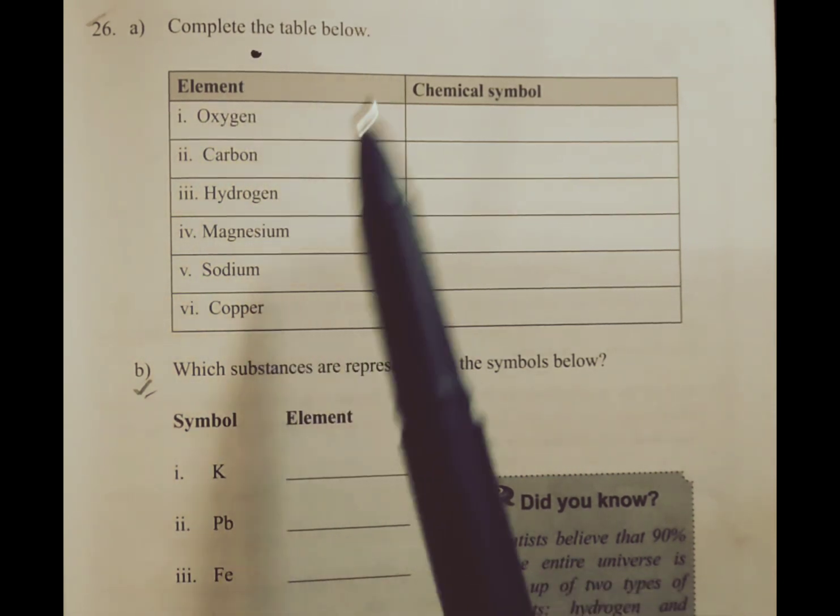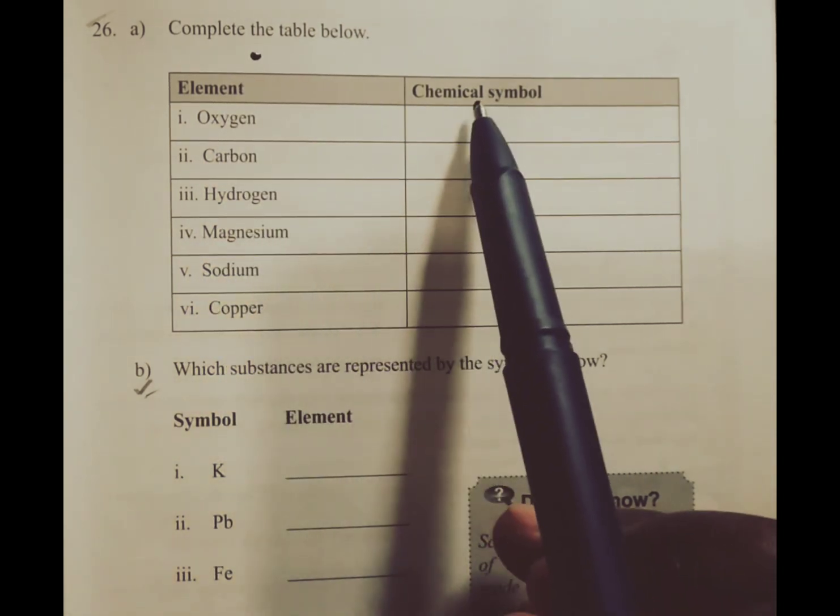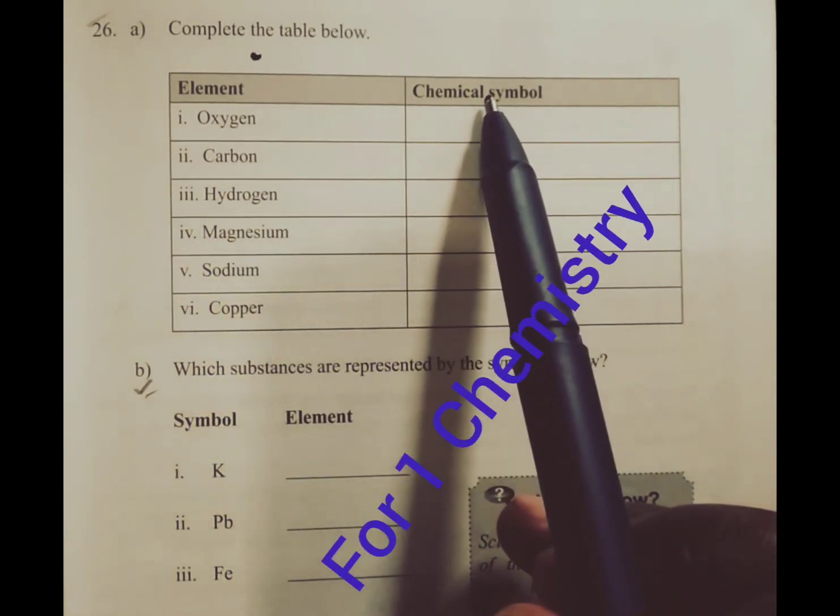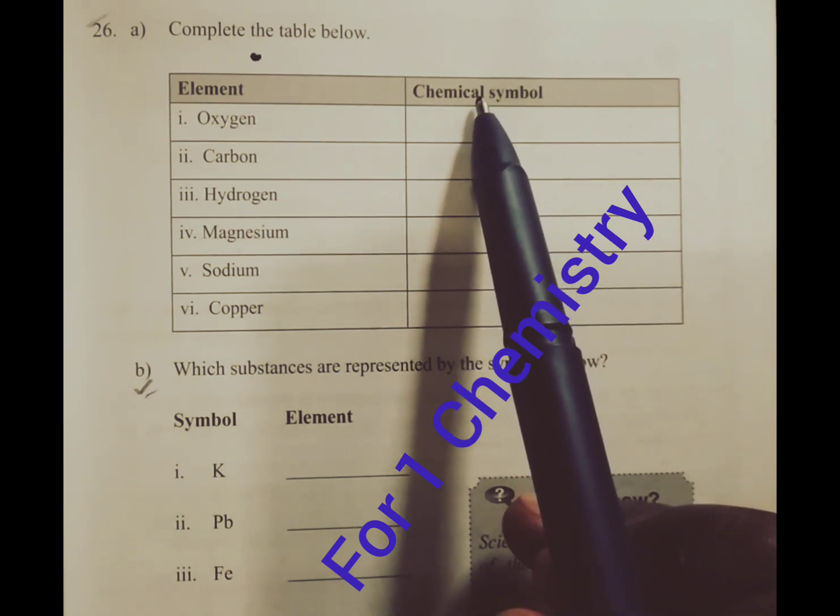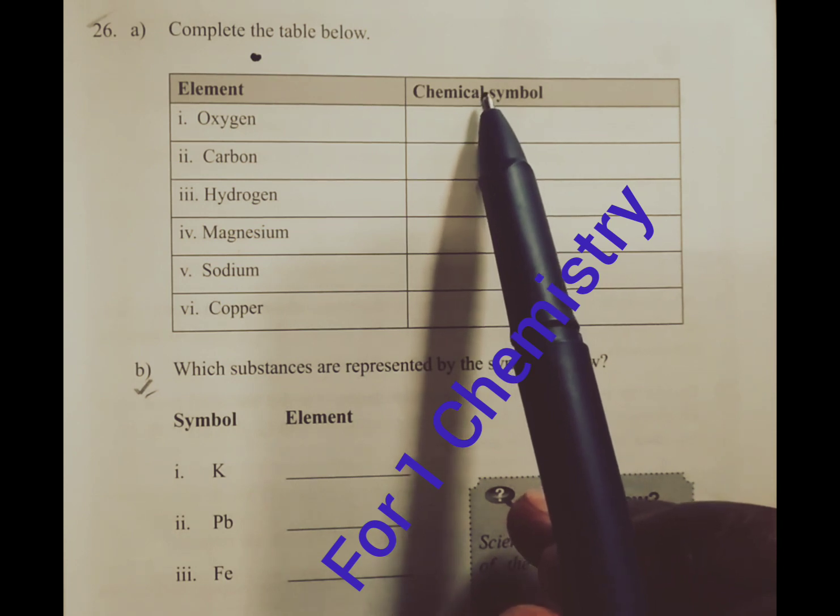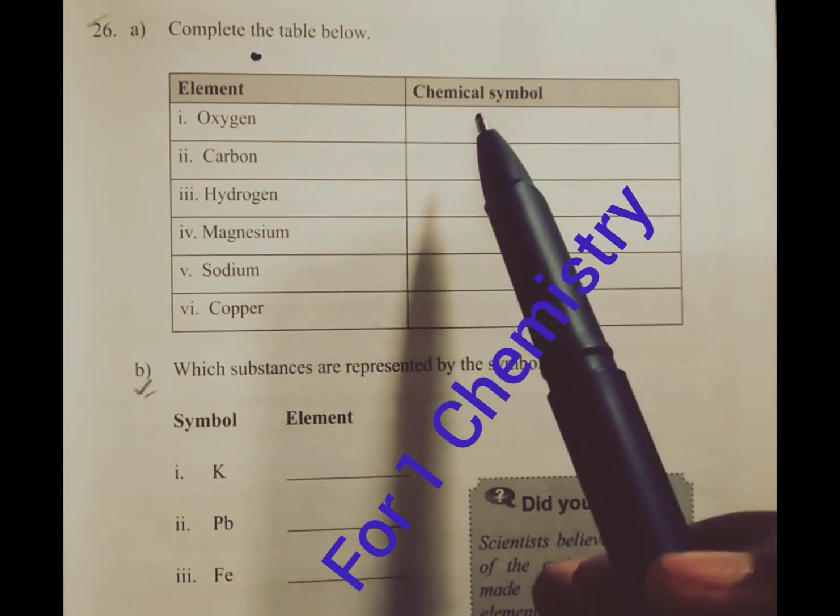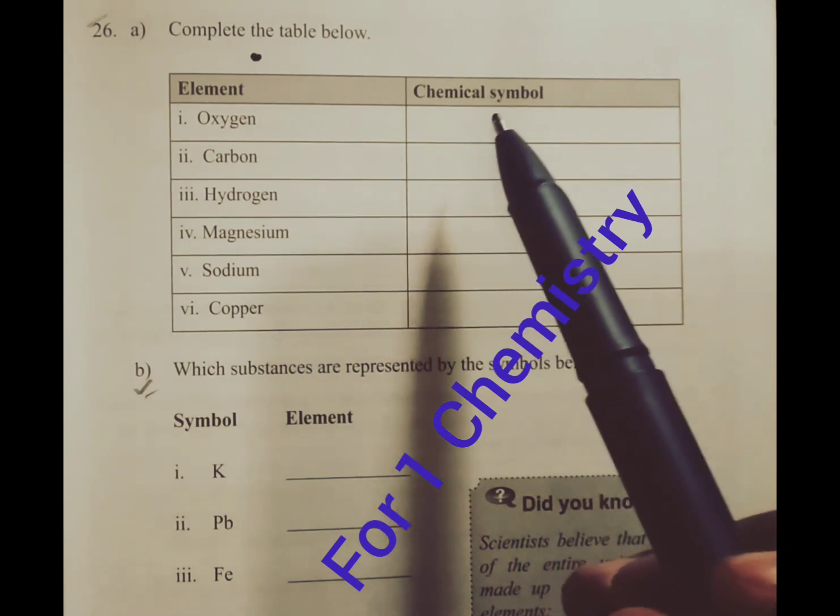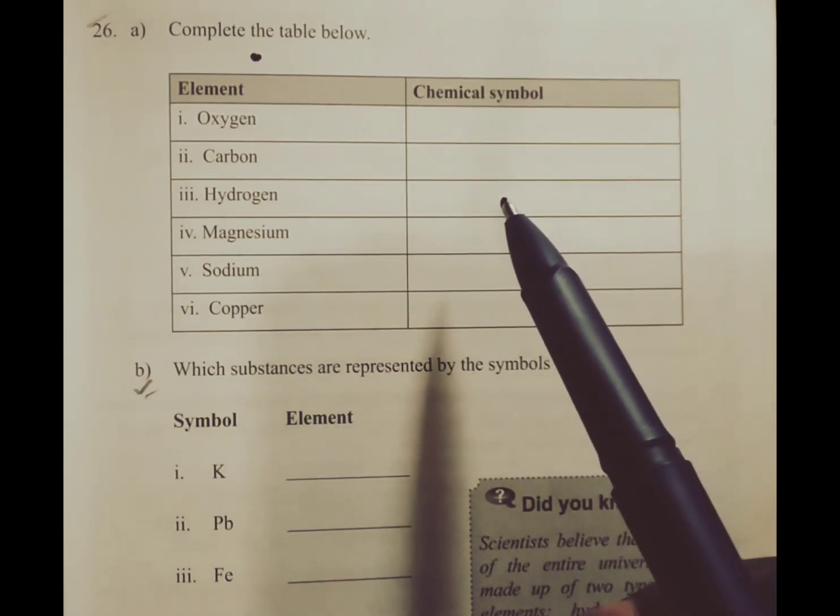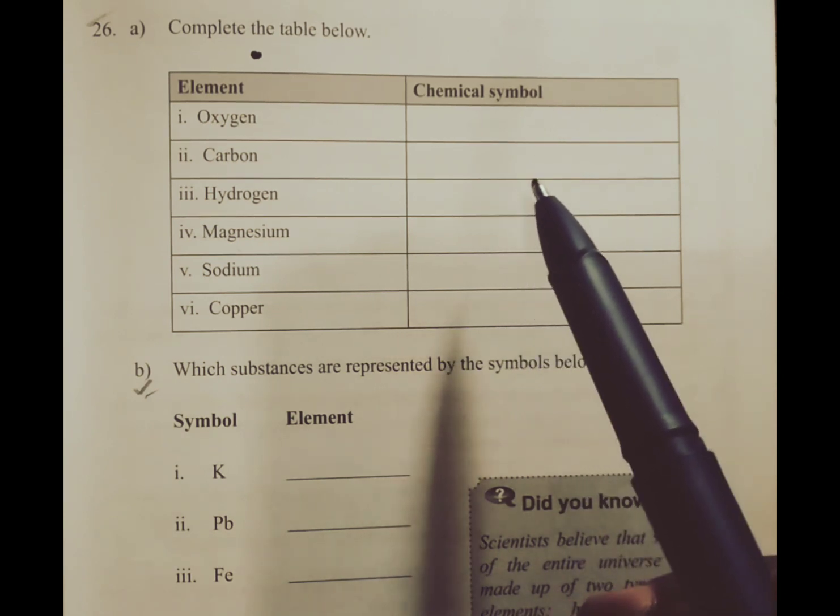Complete the table below. We have been given the column for elements and also a column for chemical symbols. A chemical symbol is a letter that represents an element, and we said the chemical symbol of an element can either be the first letter of the name of that element or the first two letters, except some few elements whose chemical symbols are derived from their Latin names.